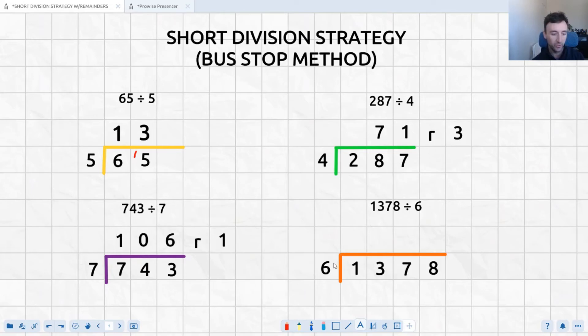Last example, our orange example, we've got 1378 divided by 6. Let's just jump straight into it. We've got 6. Now 6 doesn't go into 1 at all. However, 6 does go into 13. It goes into 13 twice.